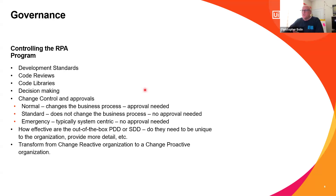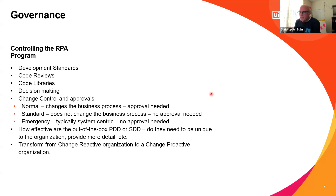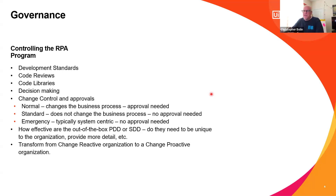Change control and approval — very important. You need to have a change control process. It's vital not only to prevent scope creep but also to make sure you have the right documentation for those automations. There are three types: normal changes, standard changes, and emergency changes.